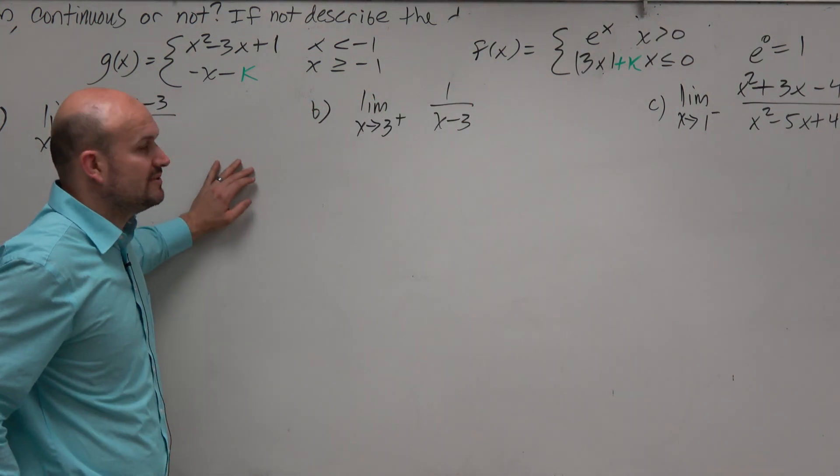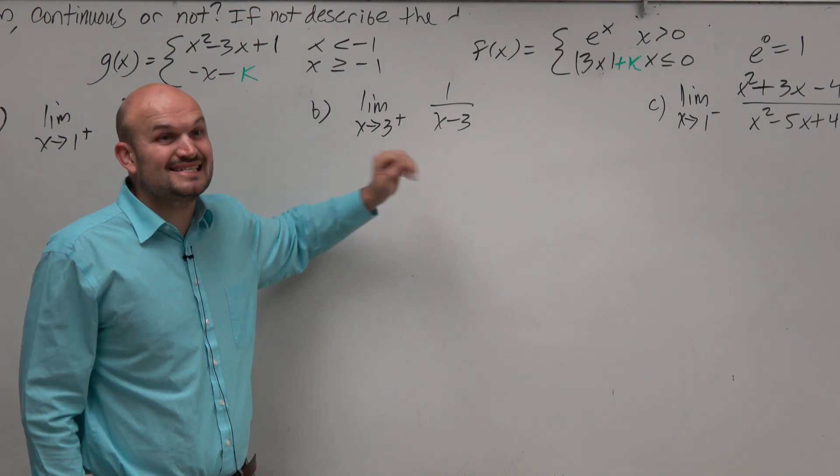So let's think of a couple things that we know that's going on here. This is a rational function. This has a discontinuity, right?